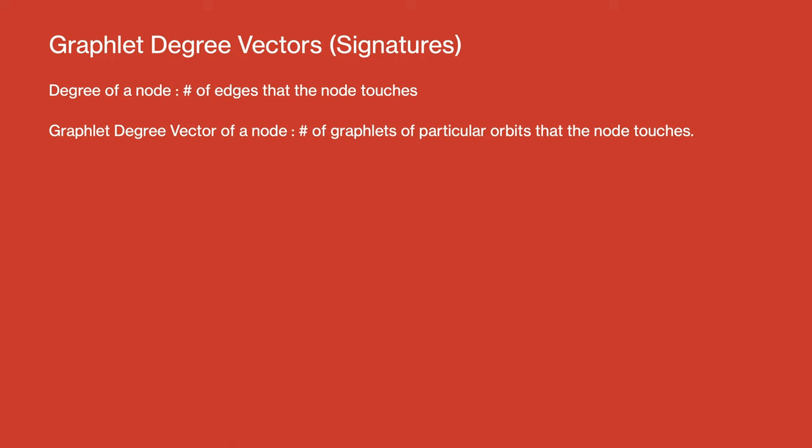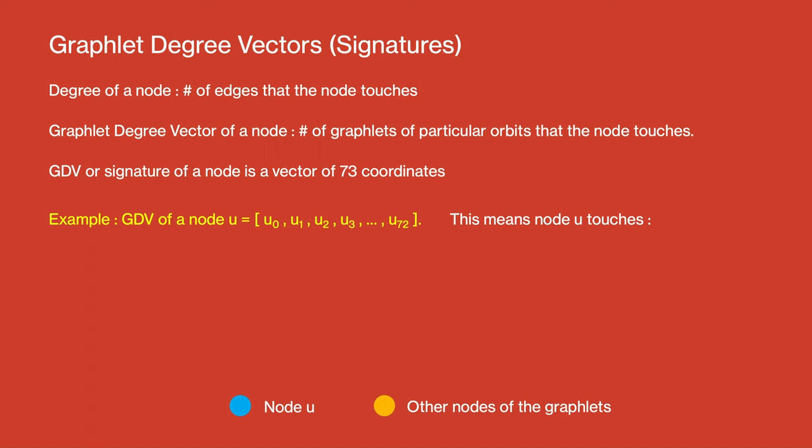We have another tool called graphlet degree vectors or signatures. Degree of a node is the number of edges that the node touches. Graphlet degree vector of a node is a generalization of that. It is the number of graphlets of particular orbits that the node touches. The GDV or signature of a node is then essentially a vector of 73 coordinates. If we take an example of a GDV of a node u, we can say that this is the meaning: this is the number of graphlets which touches the node u.